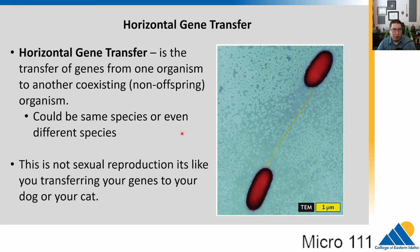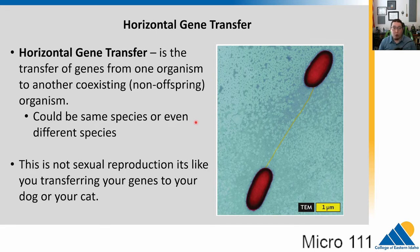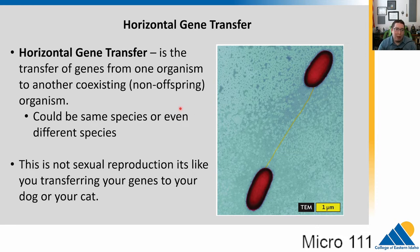Normally we have what's called vertical genetic transfer — parent to offspring. But there is another mechanism called horizontal gene transfer. This is the transfer of genes from one organism to another coexisting, non-offspring organism. It's like you giving your genes to your dog or your cat. It could be the same species or a different species, depending on the scenario.